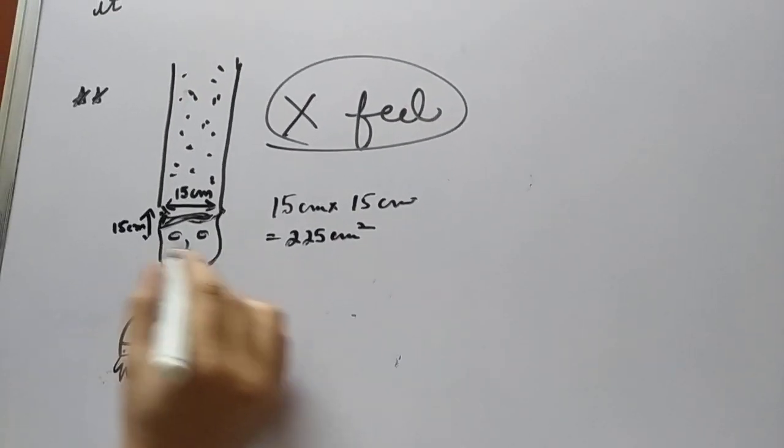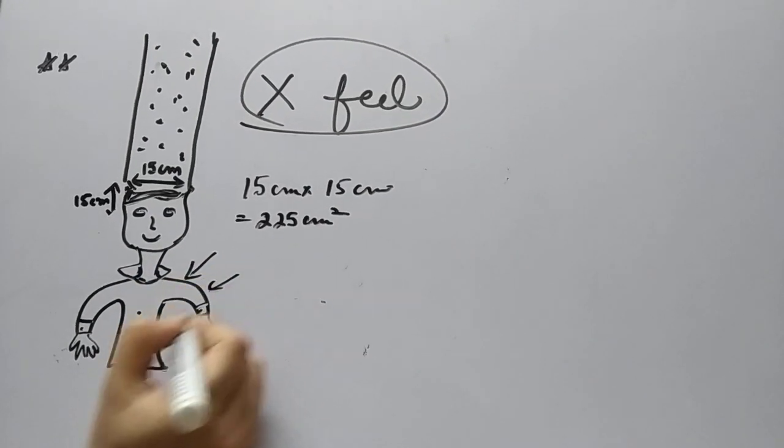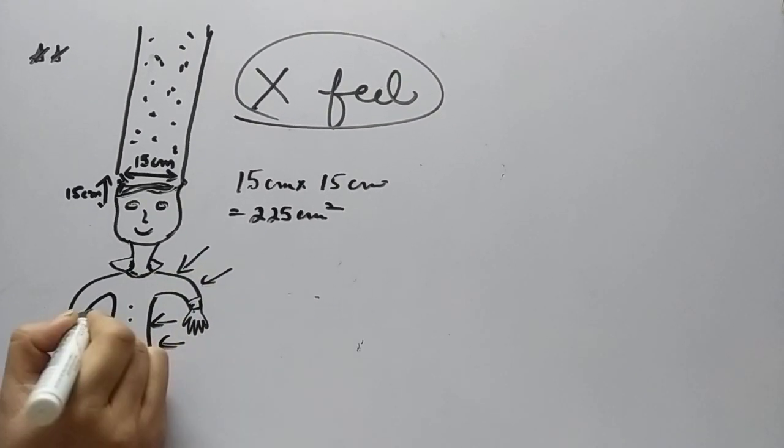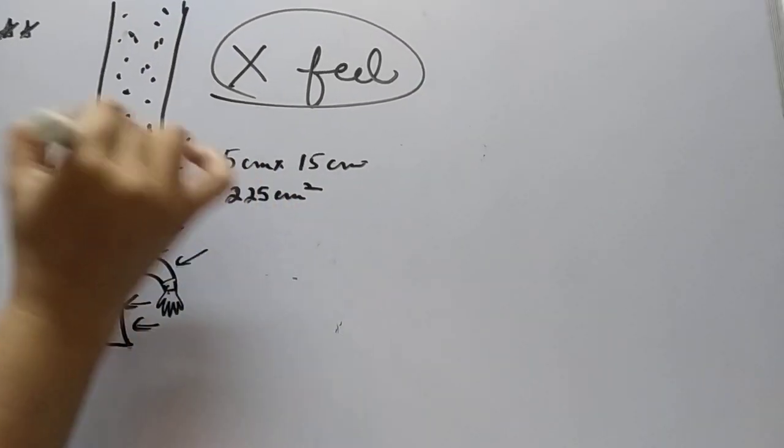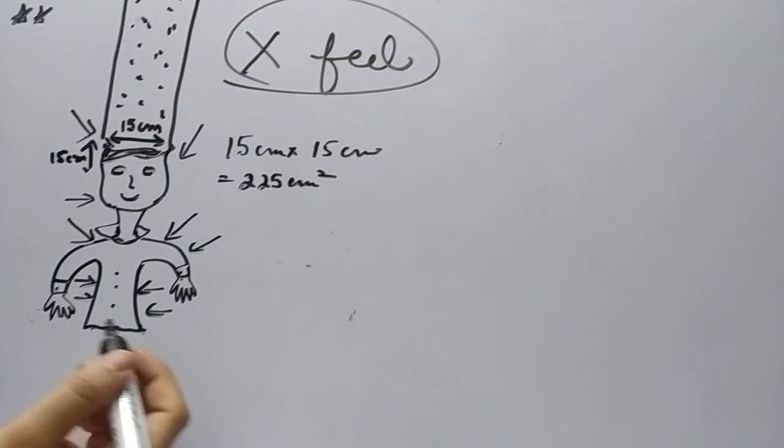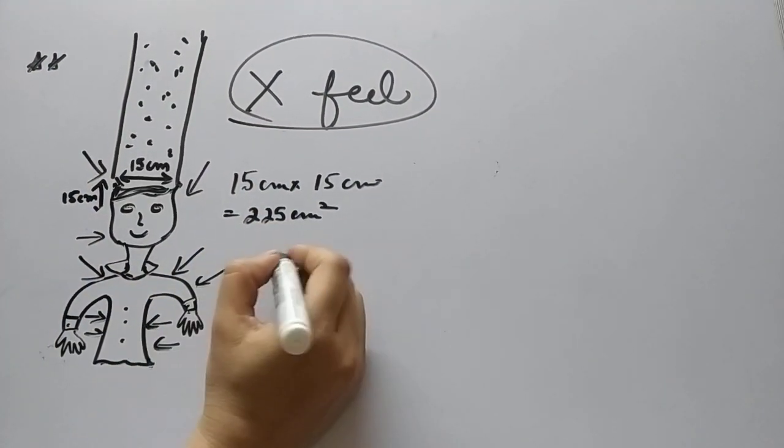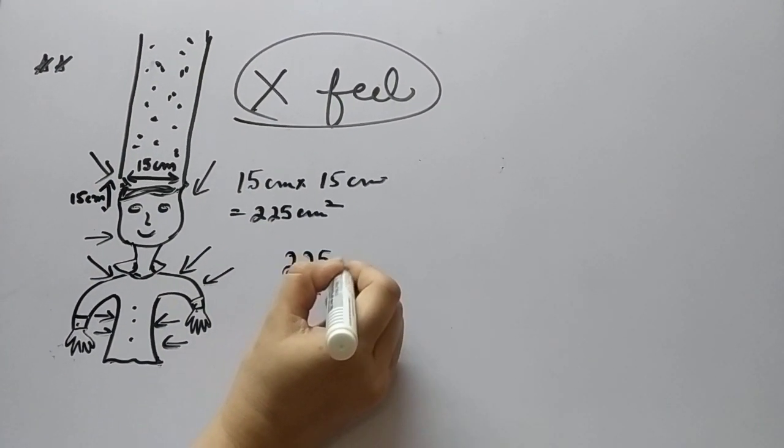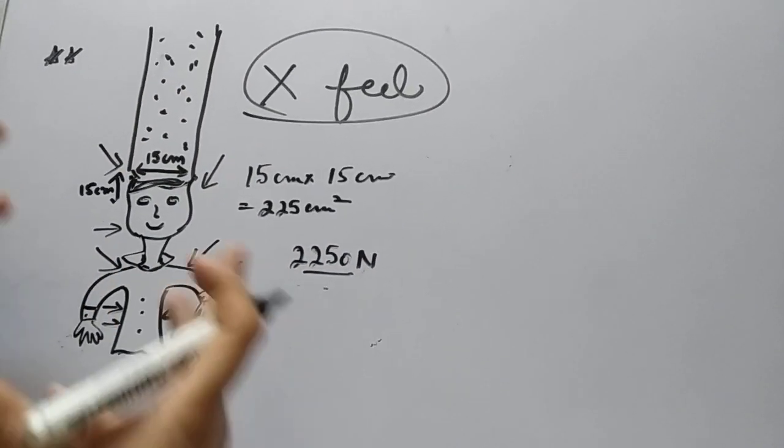Now the air, if you see it in a diagram, air is present everywhere and applying pressure on the body from everywhere. But we do not feel pressure. If this much air pressure of around 2250 Newtons force is applied all the time on our body, why do we not get crushed?